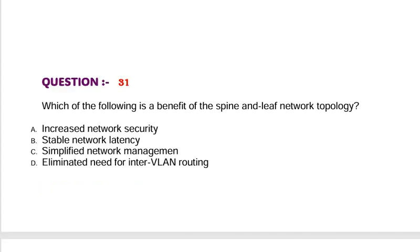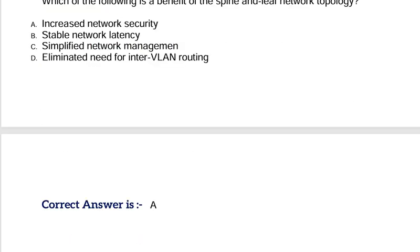Question: Which of the following is a benefit of the spine and leaf network topology? Option A, increased network security. Option B, stable network latency. Option C, simplified network management. Option D, eliminated need for inter-VLAN routing. Correct answer is Option A.